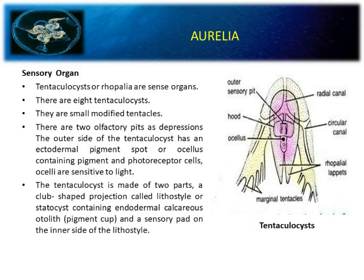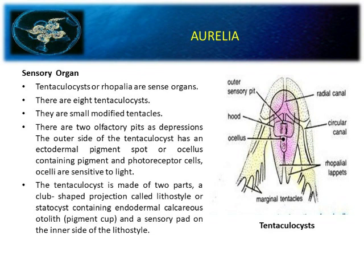The sense organ is known as tentaculocyst or rhopalium. There are eight tentaculocysts — very small modified tentacles. Each has a specific hood, ocellus, outer sensory pits, radial canal, circular canal, rhopalial lappets, and marginal tentacles. Function: the ectodermal pigment spot of ocellus contains pigment and photoreceptor cells — ocelli are sensitive to light. The tentaculocyst is made up of two parts: a club-shaped projection called lithostyle, and a statocyst containing endodermal calcareous otolith. There is also a sensory pad on the inner side.